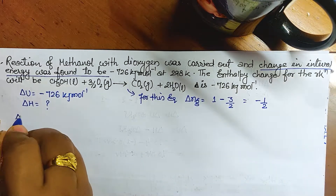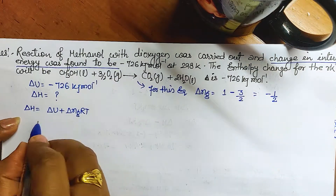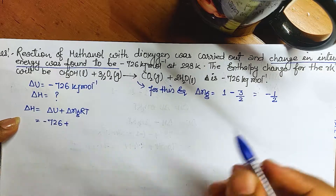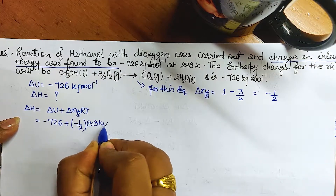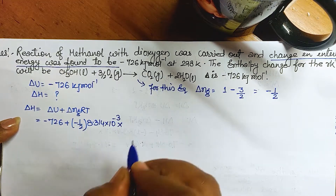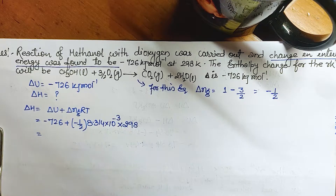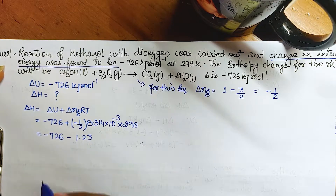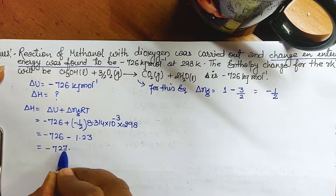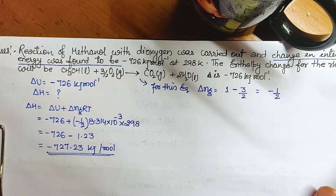Using delta H = delta U + delta Ng × R × T: delta H = minus 726 + (minus 1/2) × 8.314 × 10⁻³ × 298. Solving: 8.314 × 298 / 2 ≈ 1.23 kilojoule. Therefore delta H ≈ minus 726 − 1.23 = minus 727.23 kilojoule per mole.